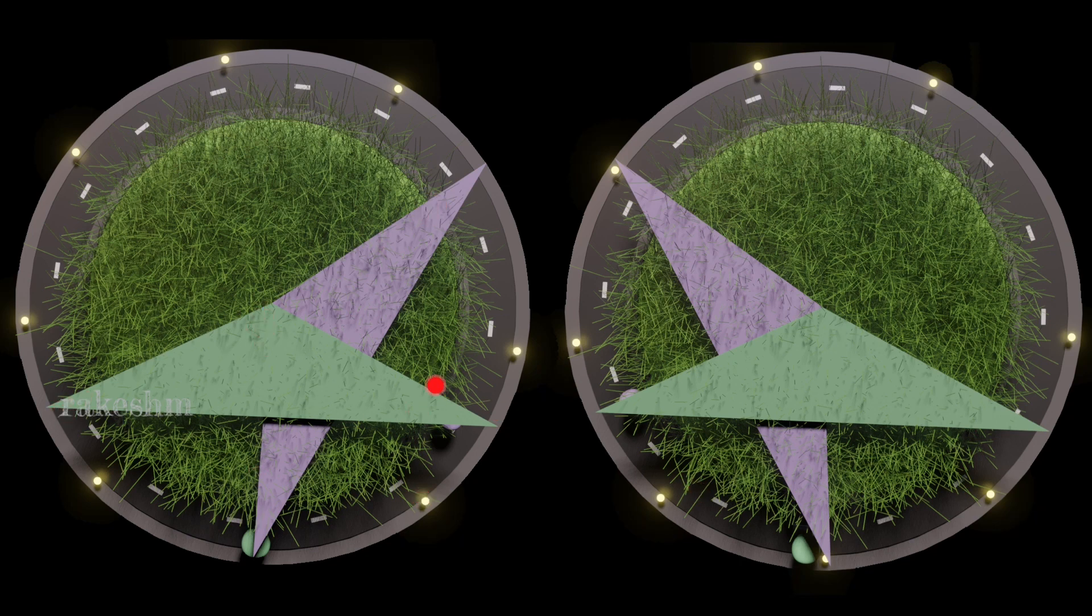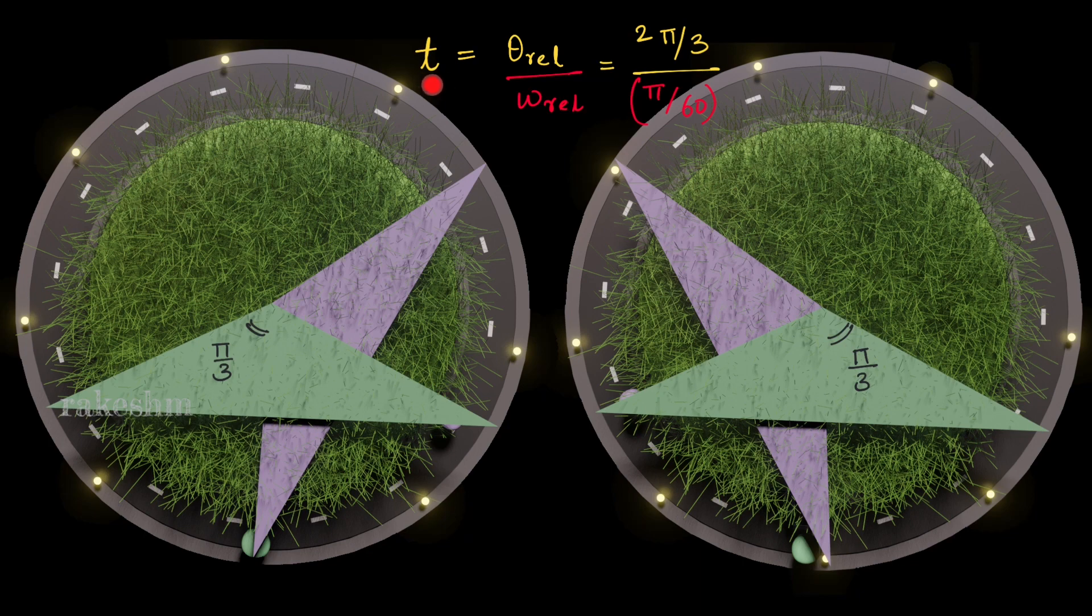Now from these two images, what we can see is when this pink triangle moves from original position till this position, both can see each other. Once this pink triangle crosses this position, they both won't be able to see each other. So from here until the pink triangle has moved pi by 3, both can see each other. And again while going one round and coming back, from here till the pink triangle again comes back to this position, both of them can see each other.